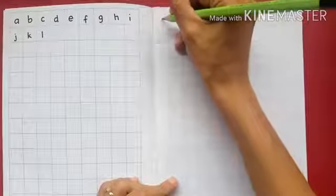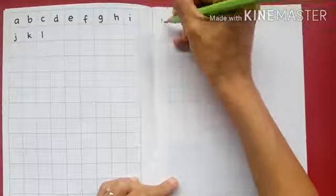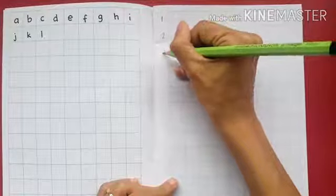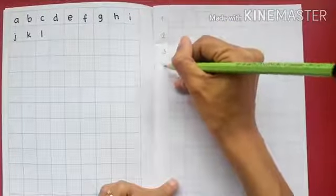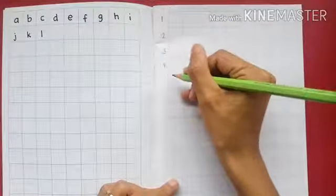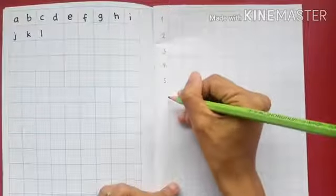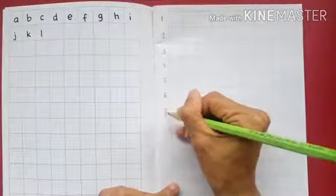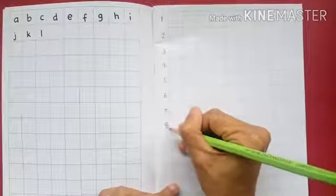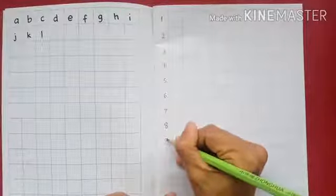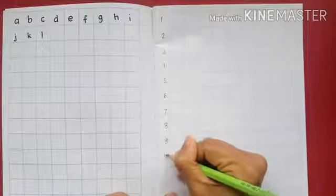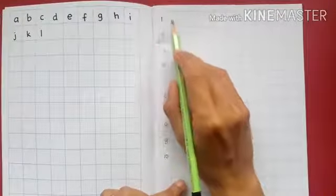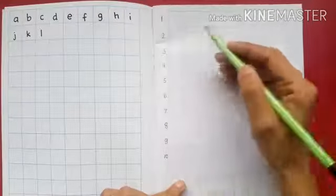Let's write numbers 1 until 10: 1, 2, 3, 4, 5, 6, 7, 8, 9, and 10. Remember, kids, one number, one box. Okay?